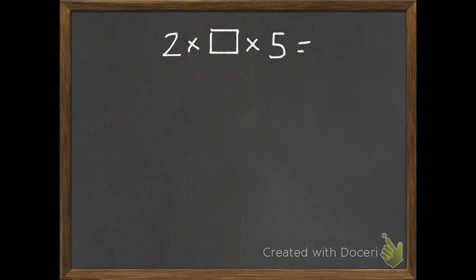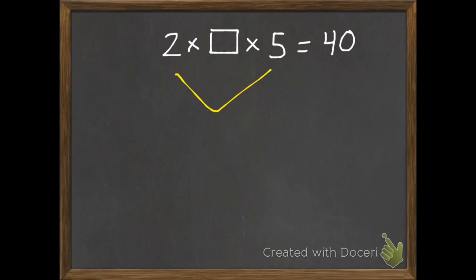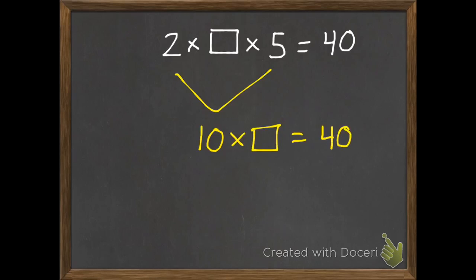And then one practice problem where you're missing one of your factors. Go ahead and pause. We take the two factors we know: 2 times 5 is 10, and we multiply 10 by something to equal 40. I can tell by looking at it that it's 4. If you can't tell by looking at it, you could take 40 and subtract 10 four times.